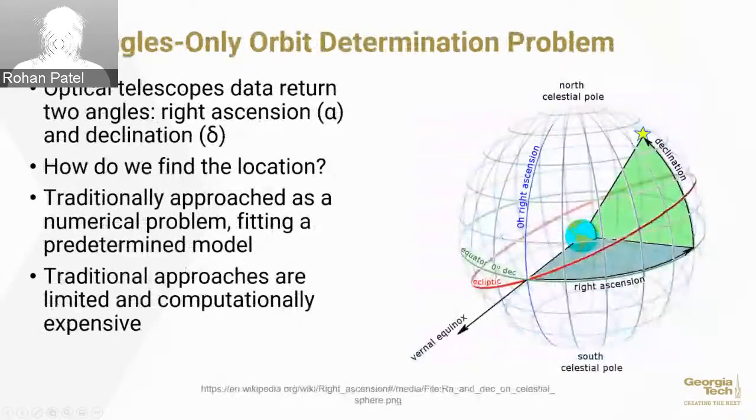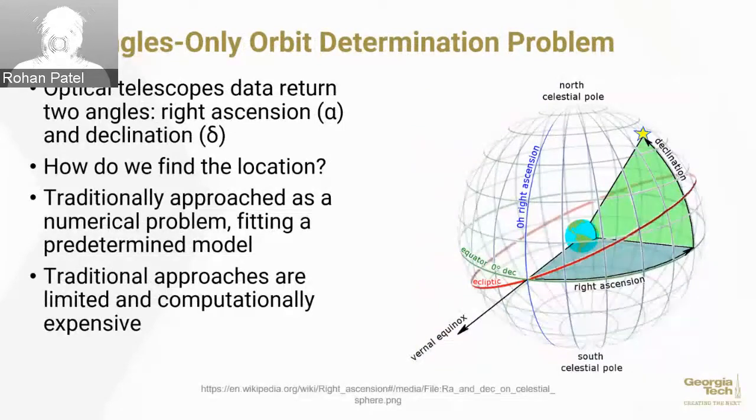Now I'm going to talk about the actual problem we want to solve, which is the angles-only orbit determination problem, specifically an initial orbit determination problem. If you take a look at the image on the right, you're someone sitting on the ground and you take a picture of a star. We'll pretend that the star is a satellite. If you're really good at recording your data, you can know where you are on Earth and the angle at which you took the picture. You can figure out its right ascension and declination, which are just two angles in a spherical coordinate system.